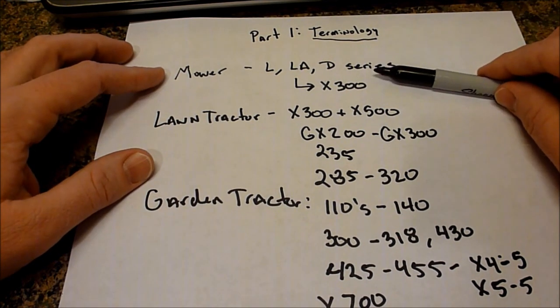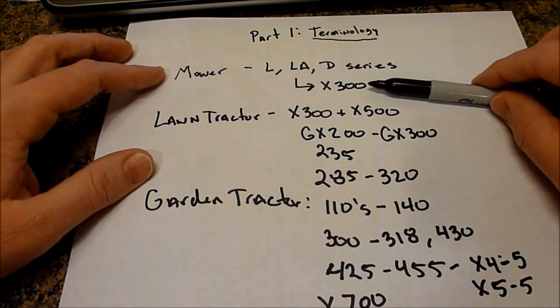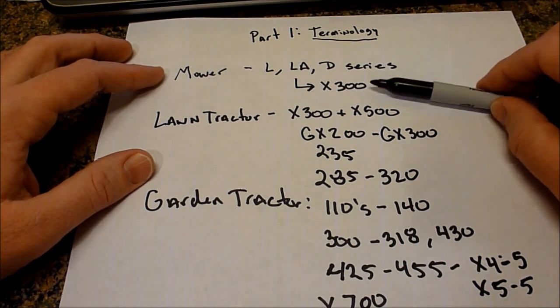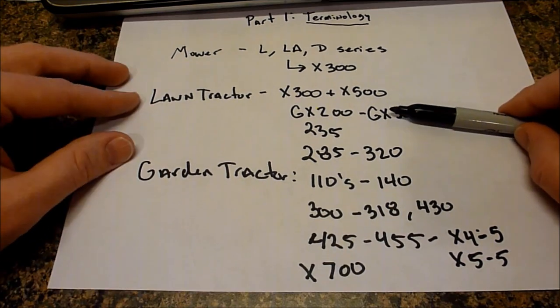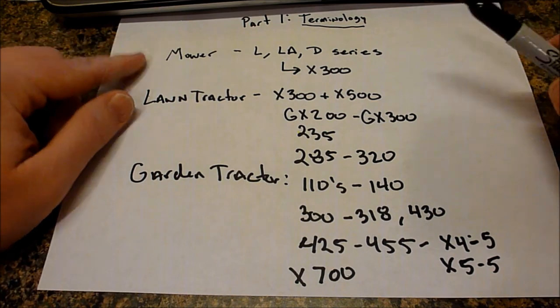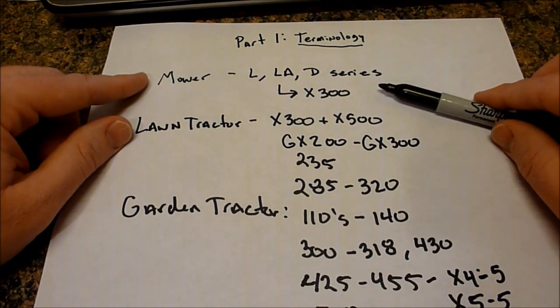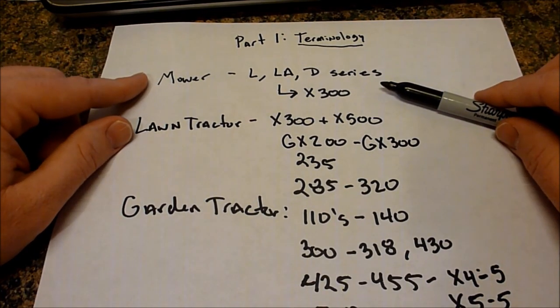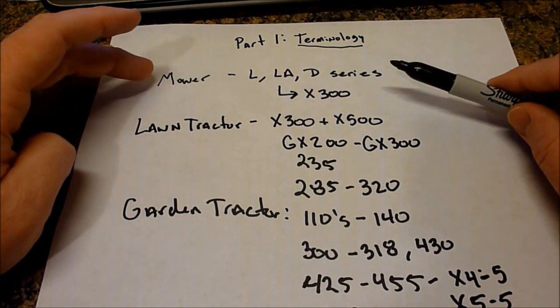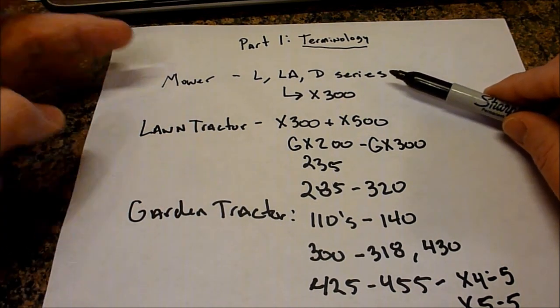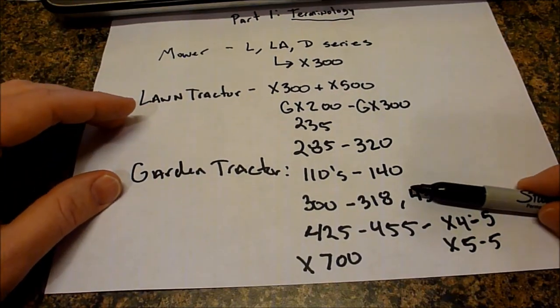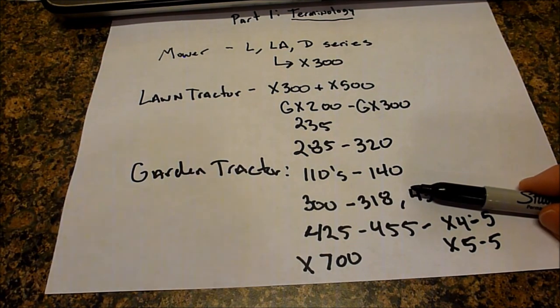The D series, and even some of the X300 series are sold at the big box stores. The X300 series is only sold at dealers. These are only sold at dealers, and these are only sold at dealers. This is just like it sounds. A mower is a mower. A mower is something that is designed to mow grass. Lawn tractor, you can do a little bit heavier tasks with it. And then a garden tractor, obviously it has ground engaging capability.